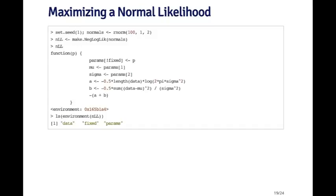If you look at the environment for this negative log likelihood function by calling ls, you'll see that the data variable is there, the fixed variable is there — which indicates which parameters should be fixed — and there's also the params variable. Those three things are all free variables inside this negative log likelihood function, but they're defined in the defining environment.